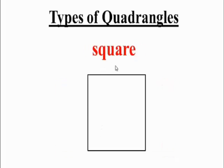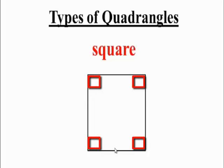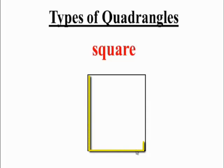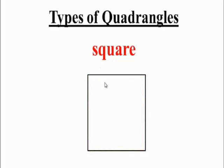This is a square. A square is different from a rectangle because although a square does have four right angles, the sides are all equal. That means that if you were to measure all the sides of a square, they would measure the same exact thing.